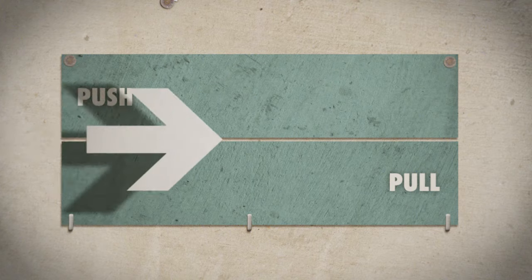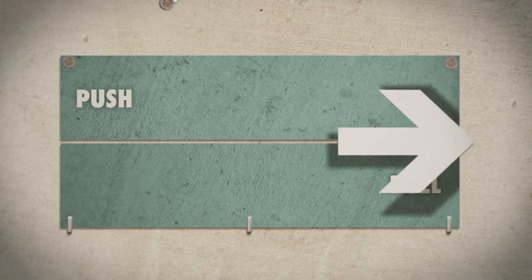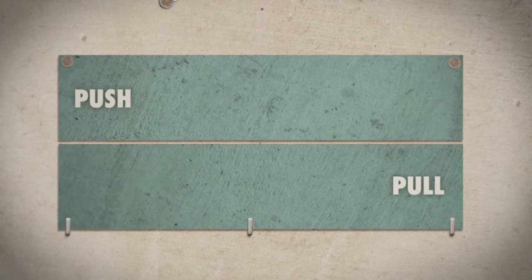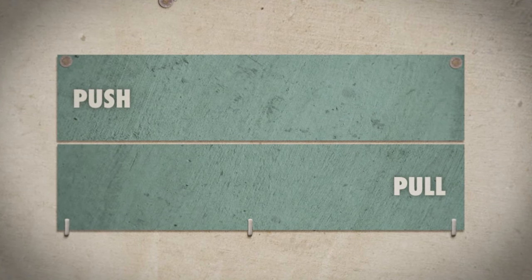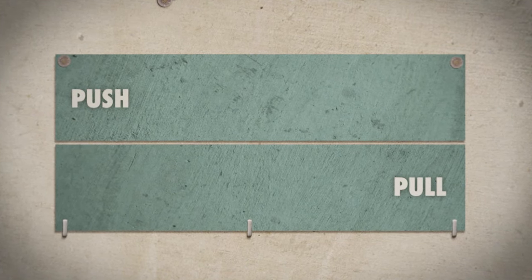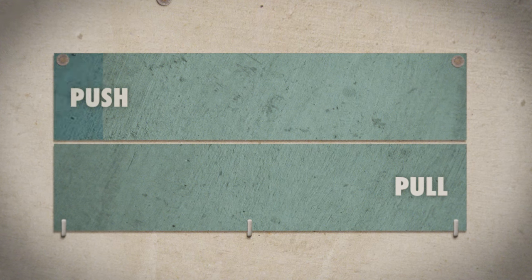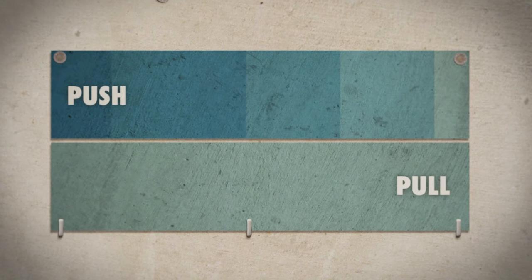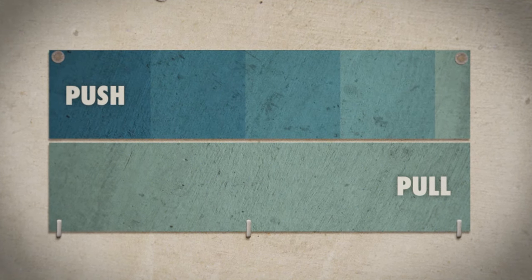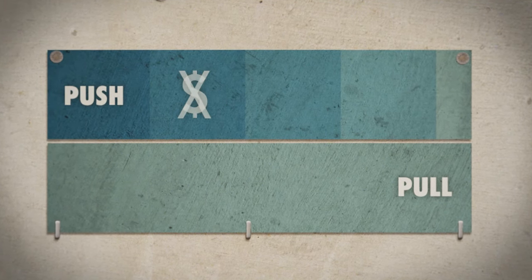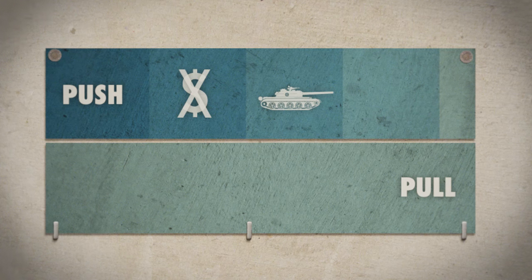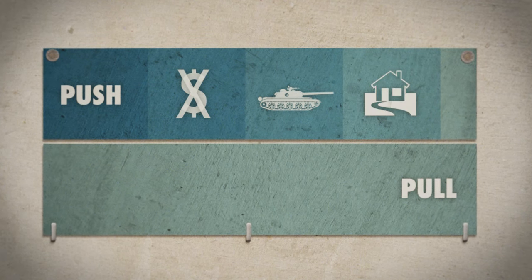Analyzing the reasons for migration, one distinguishes between push and pull factors — often both appear together. Push factors are circumstances in the country of origin that lead people to emigrate. For example, poverty, war, or environmental disasters.